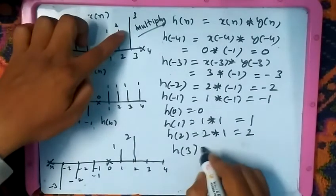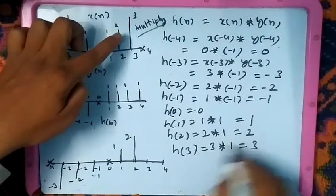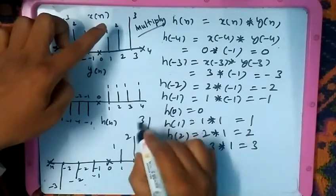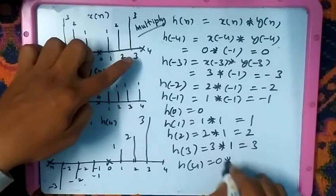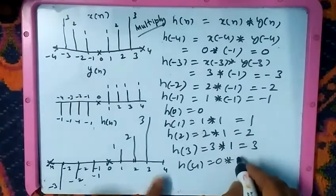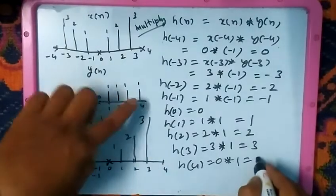...and y of n is 1, so it is 3. At 4, we have x of n is 0 and y of n is 1. That means it will be multiplied and will be 0, and there will be no signal at 4.